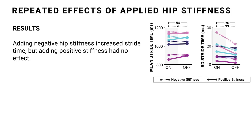The results yielded the following. First, we found that adding negative hip stiffness increased the average stride time, but adding positive stiffness had no effect on mean stride time. In both cases—positive or negative stiffness—neither had any effect on the variability or standard deviation of stride time, as you can see in the two figures to the right.